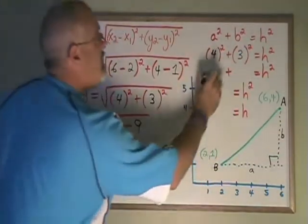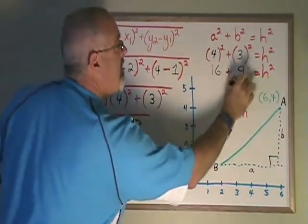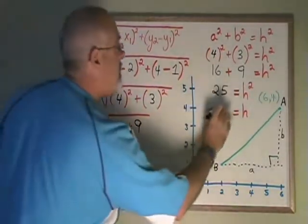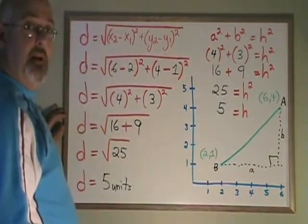4 squared is 16, 3 squared is 9, 16 plus 9 is 25, and the square root of 25 is 5. We are getting the same answer.